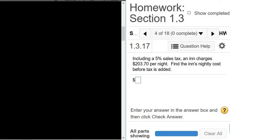So in order to figure this out, we will start by letting x be the variable we're looking for. We're letting x be the inn's nightly cost, the original price.